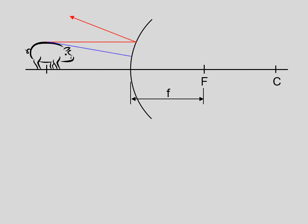Rule number two says start at the top of the object and head for the focal point. But this blue light ray isn't going to hit the focal point because it's going to bump into the mirror first. When it bumps into the mirror, it reflects parallel to the principal axis. So rule one, indicated by the red line: go in parallel, bounce out through the focal point. Rule two: head towards the focal point, bounce out parallel.